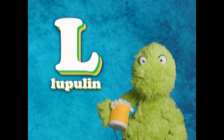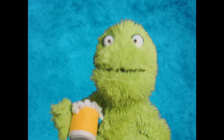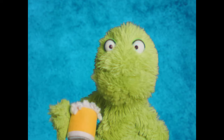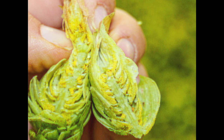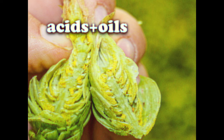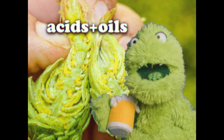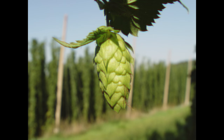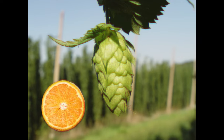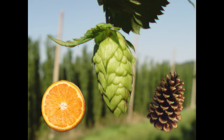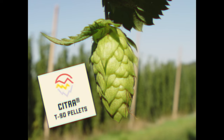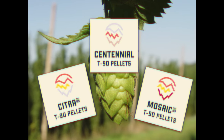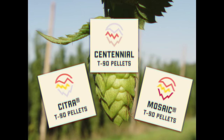L is for lupulin — the powdered stuff found in hop cones. There are many acids and oils that live in there. Good stuff! M is for Myrcene, another hop oil. Myrcene is most commonly connected to citrus and pine flavors and aromas. It's one of the most widely found hop oils, and hops like Citra, Centennial, and Mosaic are famous for their high Myrcene levels.